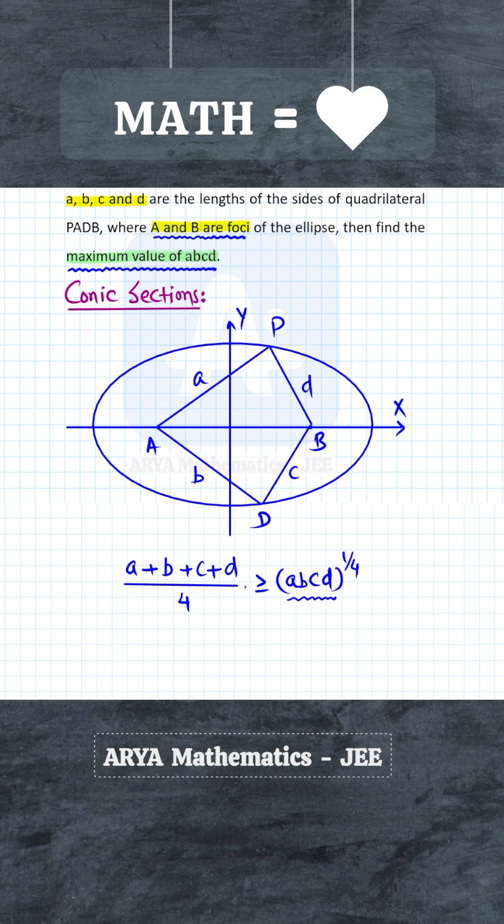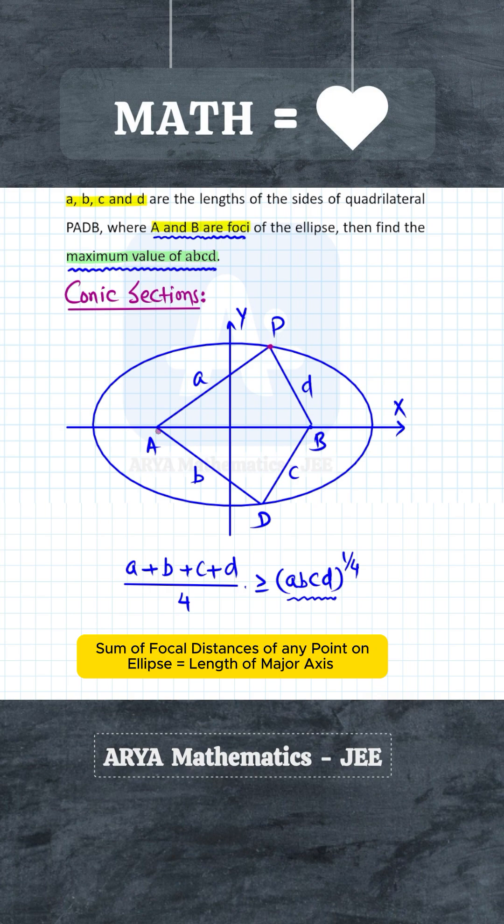Now here we can use one interesting property of the ellipse: that if we have a point on the ellipse, then the sum of the distances of that point from the two foci is nothing but the length of the major axis of the ellipse.